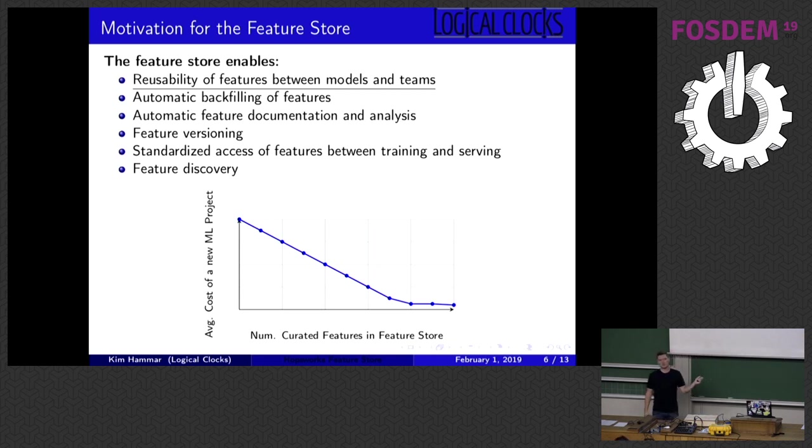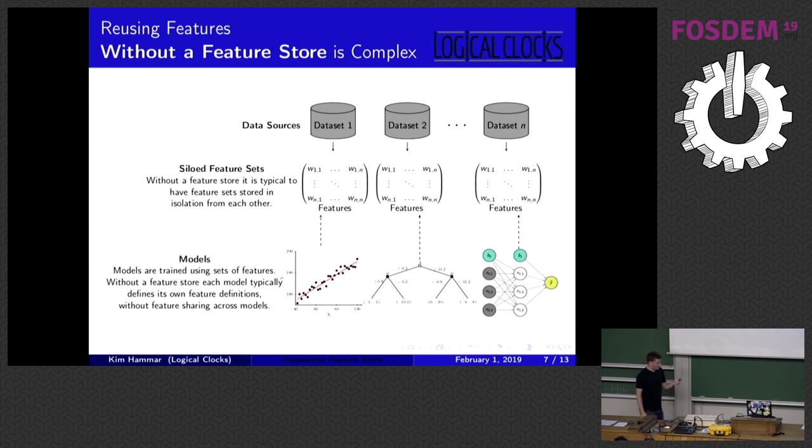This is like a typical architecture at an organization today for doing machine learning, where you have this kind of siloed machine learning pipelines, one for each product. This is a fairly simple workflow, but when you have this architecture, it's very hard to do things like reusing features across different pipelines. So typically what you have to do is that if you have a feature here that you want to reuse here, you just copy the definition and recompute it again.